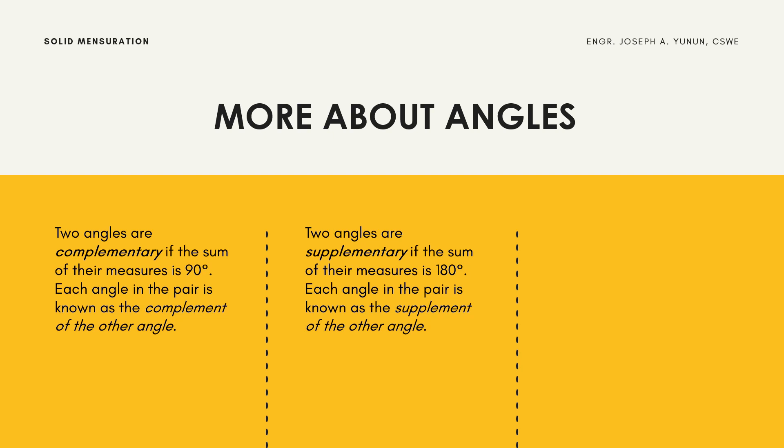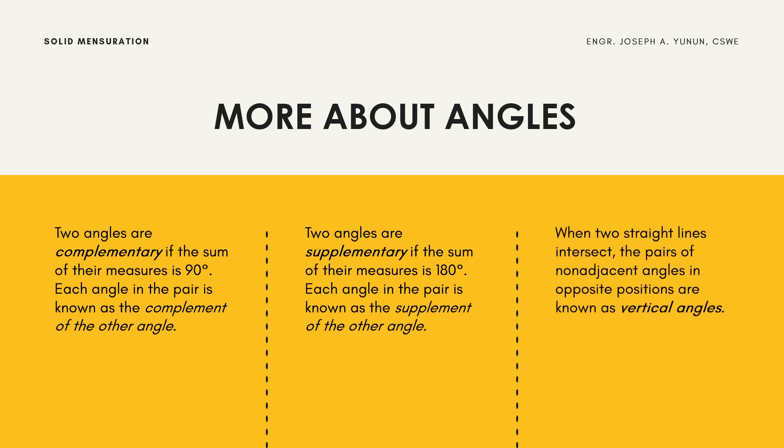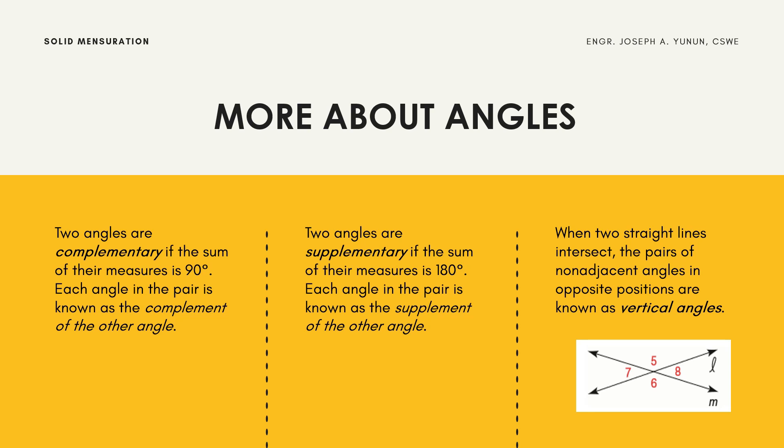When two straight lines intersect, the pairs of non-adjacent angles in opposite positions are known as vertical angles. As shown in the figure, angle 5 and angle 6 are vertical angles, and similarly angle 7 and angle 8 are also vertical angles.